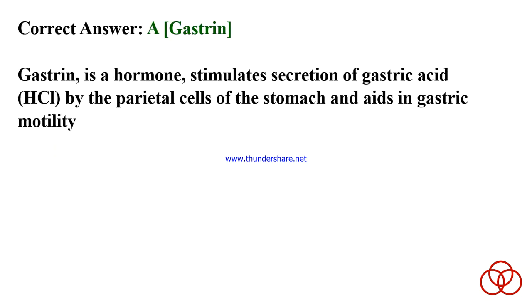Which among the following is not an enzyme? A) Gastrin. B) Ptyalin. C) Pepsin. D) Renin. Correct answer: A. Gastrin. Gastrin is a hormone that stimulates secretion of gastric acid (HCl) by the parietal cells of the stomach and aids in gastric motility.